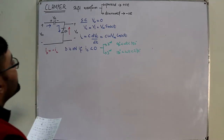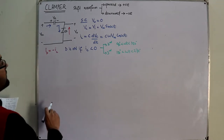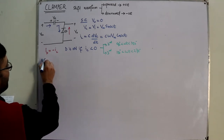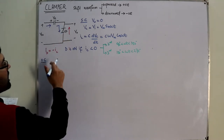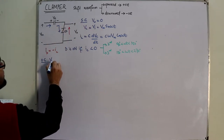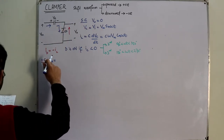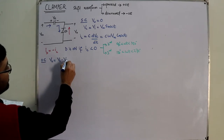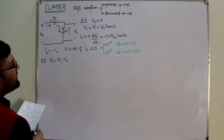Now if the diode is off — for the open circuit test — the output is equal to input minus Vc. Initially the capacitor is uncharged, so Vc = 0. Since this is an open circuit, no current is flowing, which means Vc is also zero. So this implies that the output is equal to the input in this case.